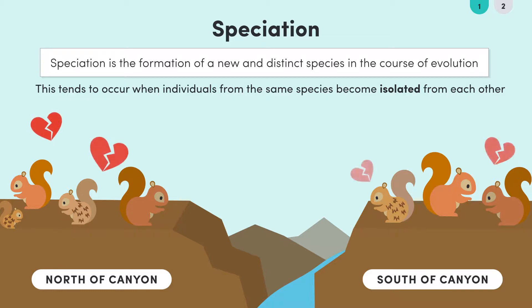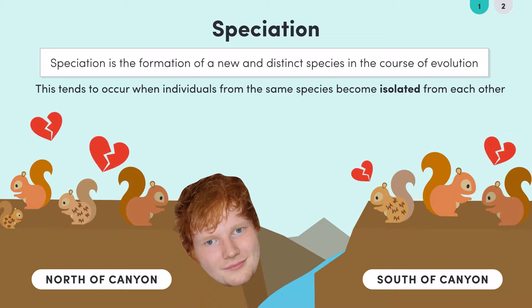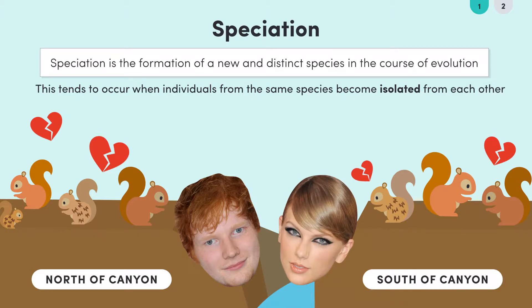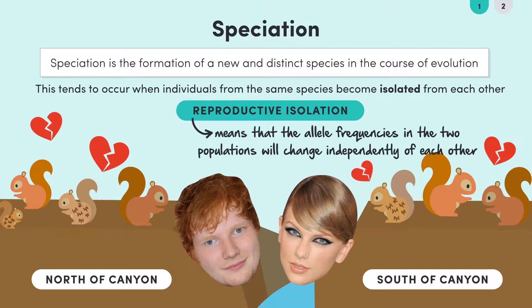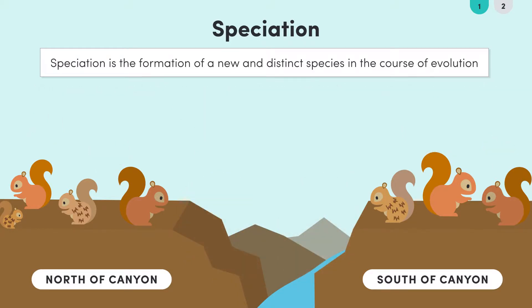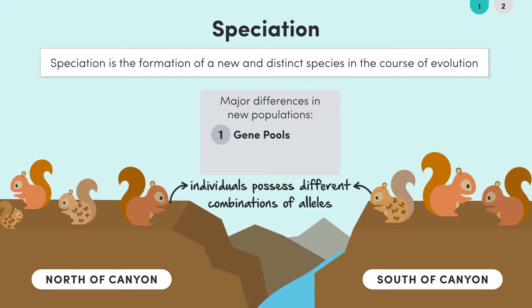The technical term for being unable to breed is reproductive isolation. This means that the allele frequencies in the two populations will change independently of each other. Now, even though they originated from the same population, these two new populations have a couple of major differences. The gene pools of each population are different due to natural genetic variation between individuals and genetic drift. In other words, the individuals possess different combinations of alleles.